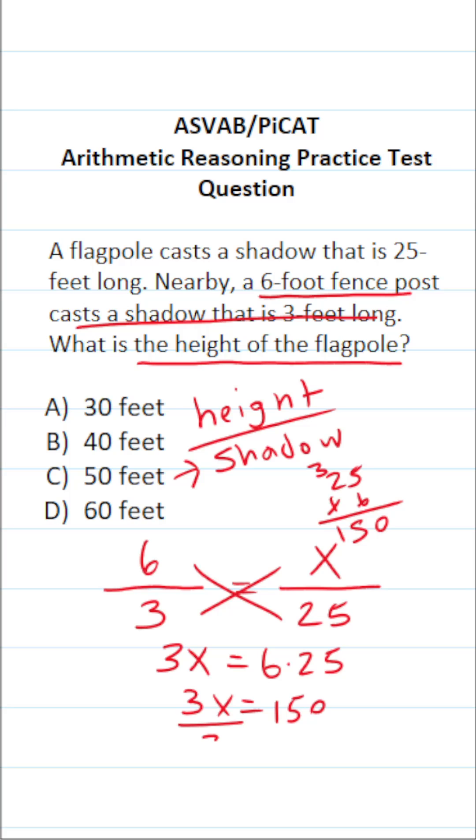To get X by itself, we're now going to divide both sides of the equation by 3. This says X equals—15 divided by 3 is 5, so just tack on that 0. So 150 divided by 3 is 50. In other words, the height of this flagpole is C, 50 feet.